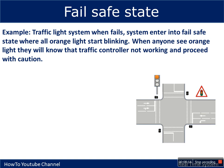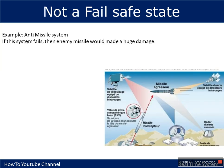For example, a traffic light system has a fail-safe state. When it fails, it starts blinking an orange light so that anyone who sees it knows that traffic control is not working and should proceed with caution. So there is a defined fail-safe state for this system.